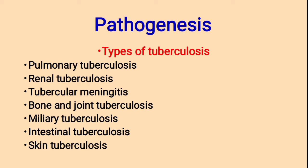Types of tuberculosis — what are the different types of tuberculosis affecting different people? First: pulmonary tuberculosis, renal tuberculosis, tubercular meningitis, bone and joint tuberculosis, intestinal tuberculosis, and skin tuberculosis. Miliary tuberculosis means disseminated form of tuberculosis. It is a very fatal form of tuberculosis, where large numbers of bacteria travel through the bloodstream forming miliary tuberculosis.